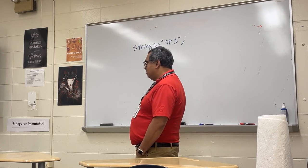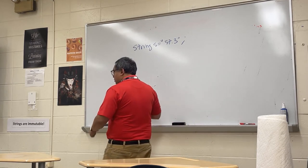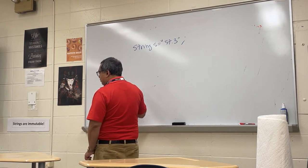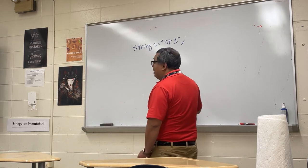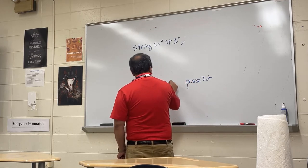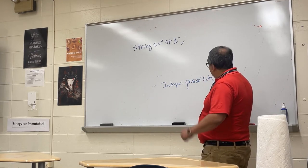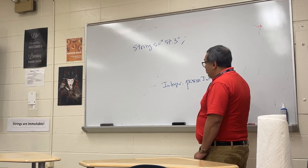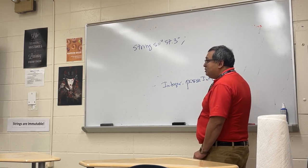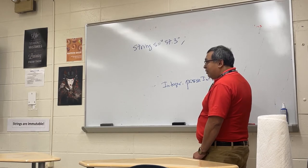Student question: if those were variables already declared as integers, would it still work? The parseInt call won't even compile if you pass it a number instead of a string, because parseInt expects a string as its argument. It can't be a number, decimal number, boolean, or object — it has to be a string.